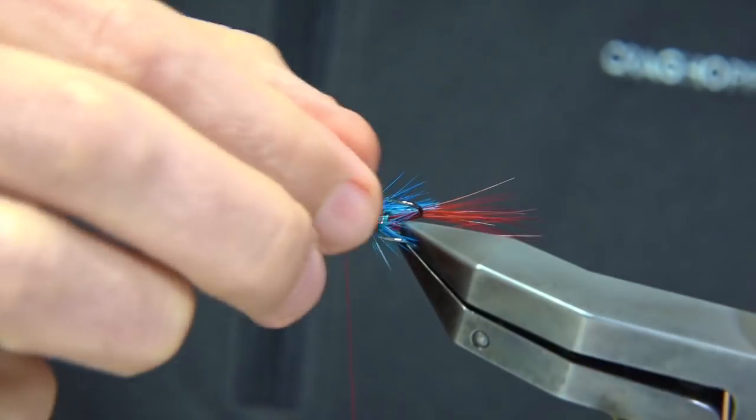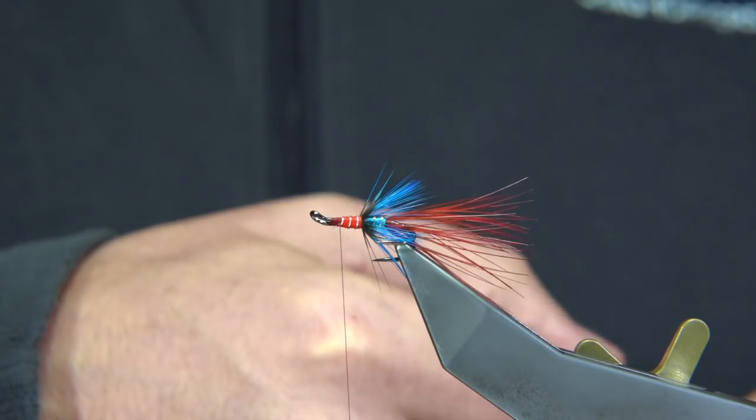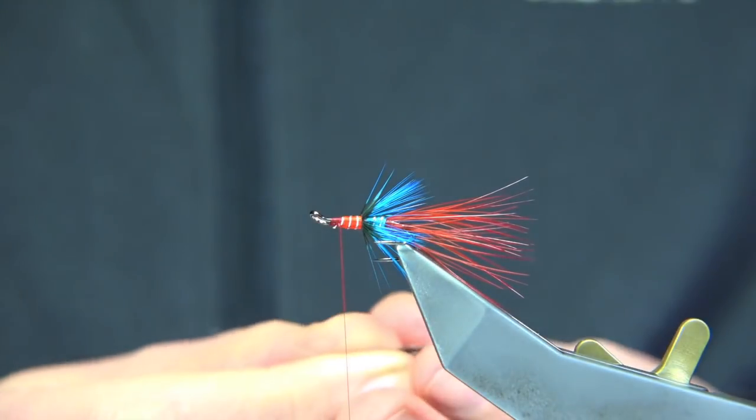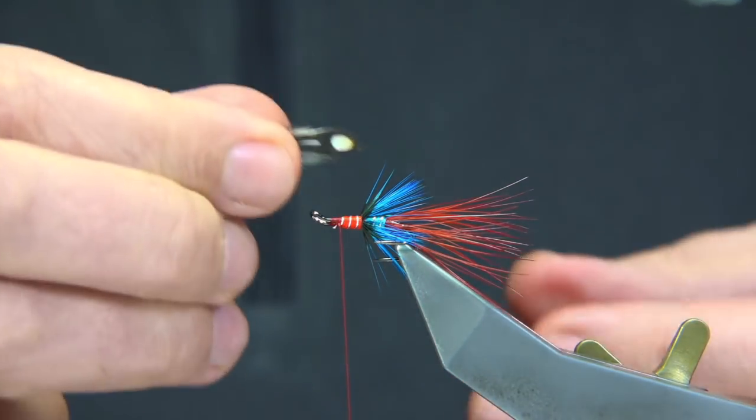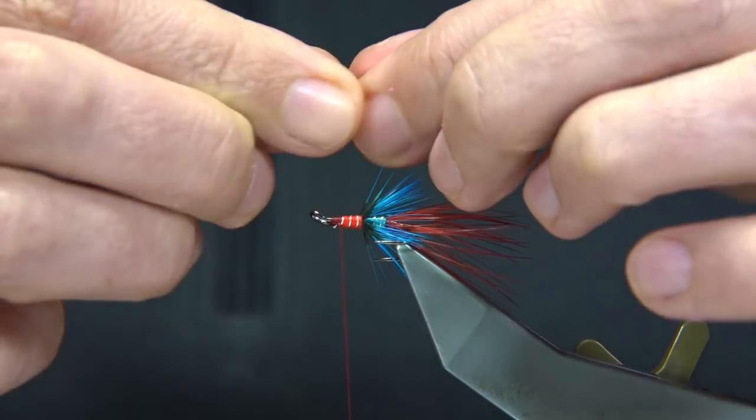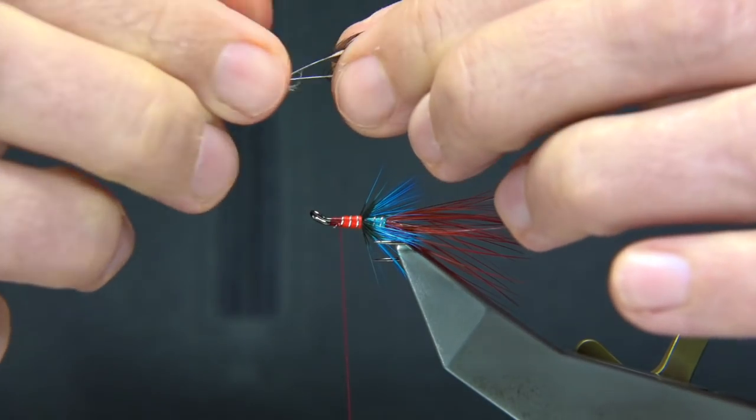You can see the color. The color is beautiful. So two jungle cock eyes. Obviously the same size. Just going to lay one on top of the other. Look at the length. Just to the back of the hook. Make a space for the jungle cock to be tied in.